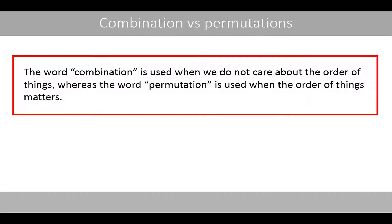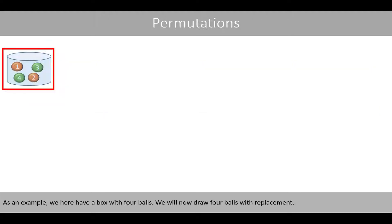The word combination is used when we do not care about the order of things, whereas the word permutation is used when the order of things matters. As an example, we here have a box with 4 balls.